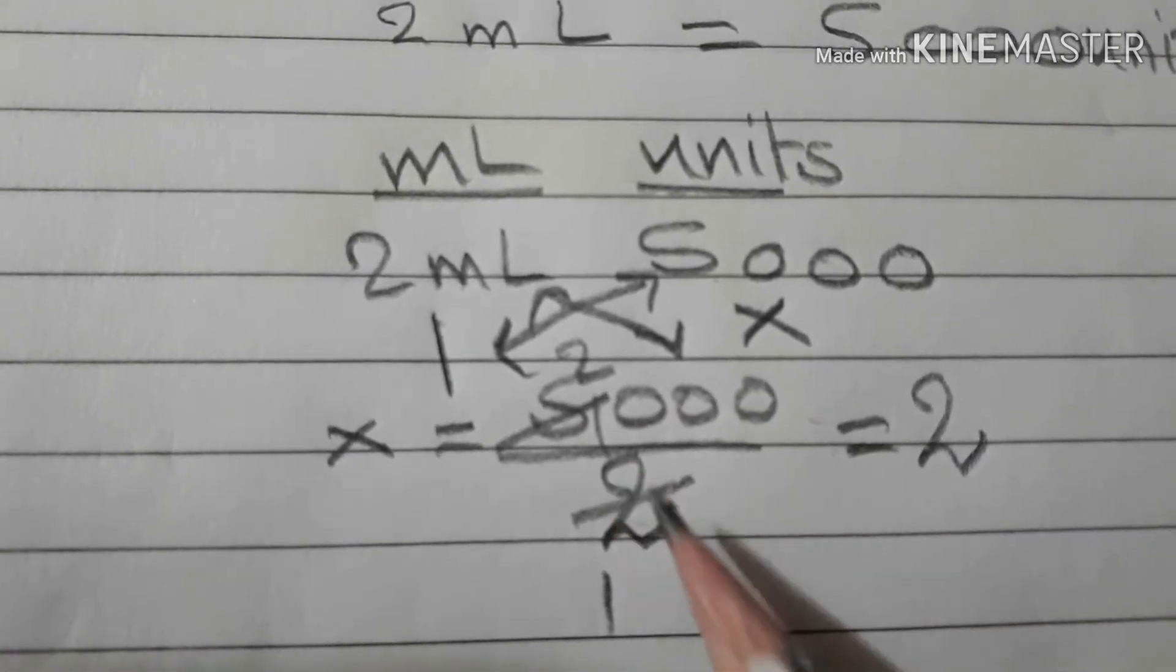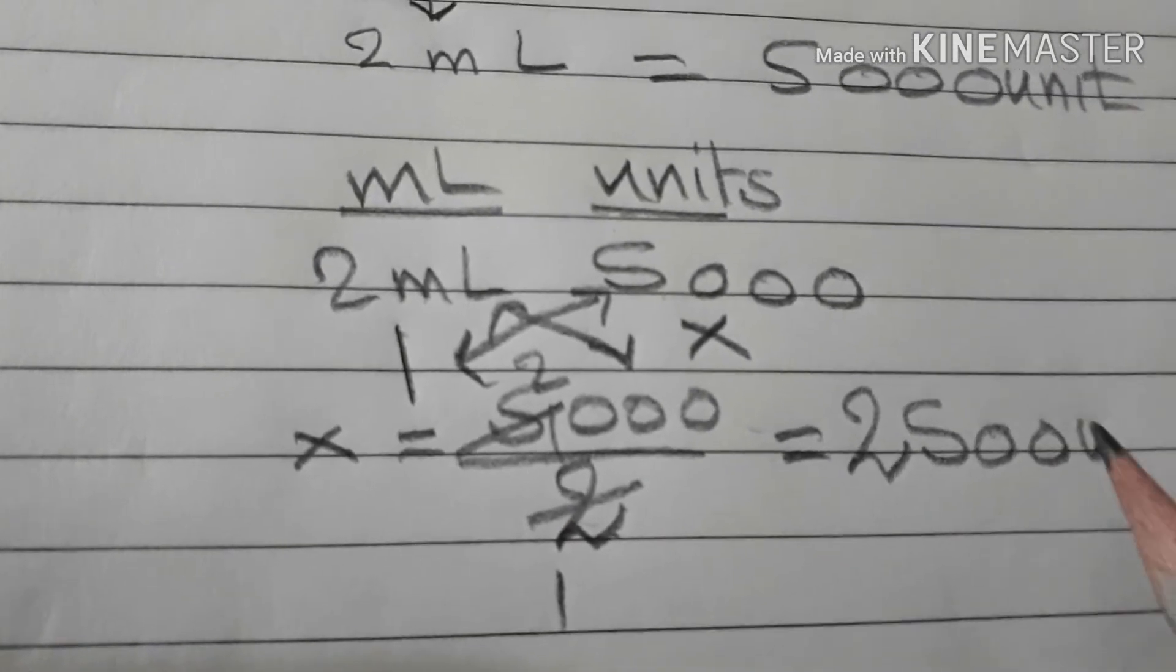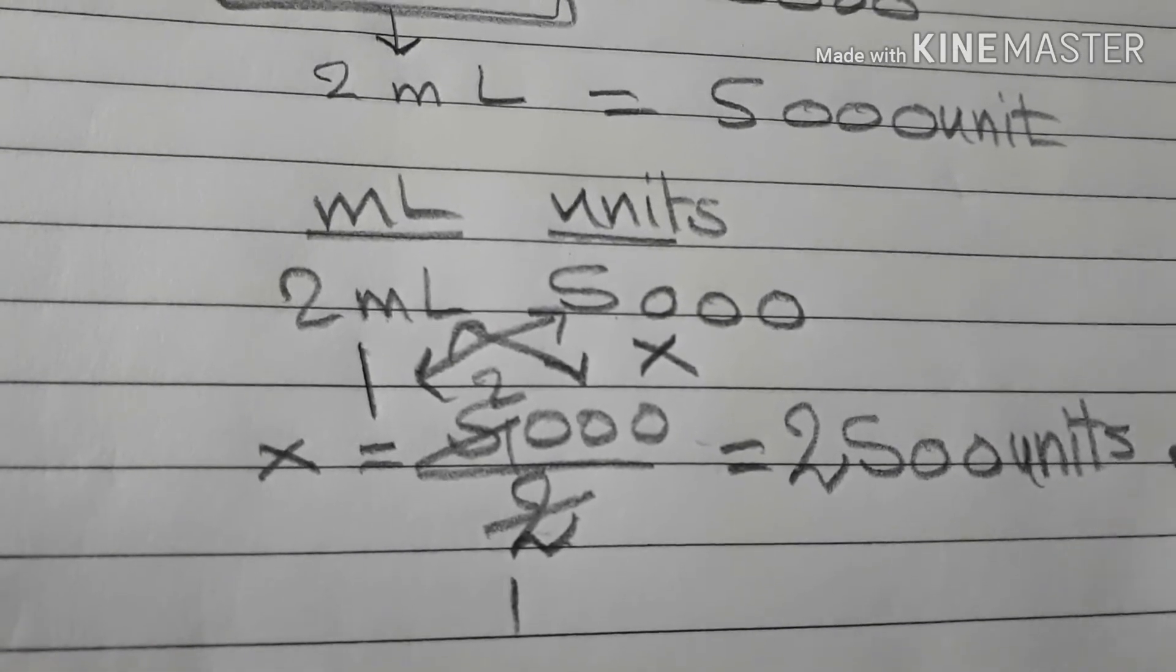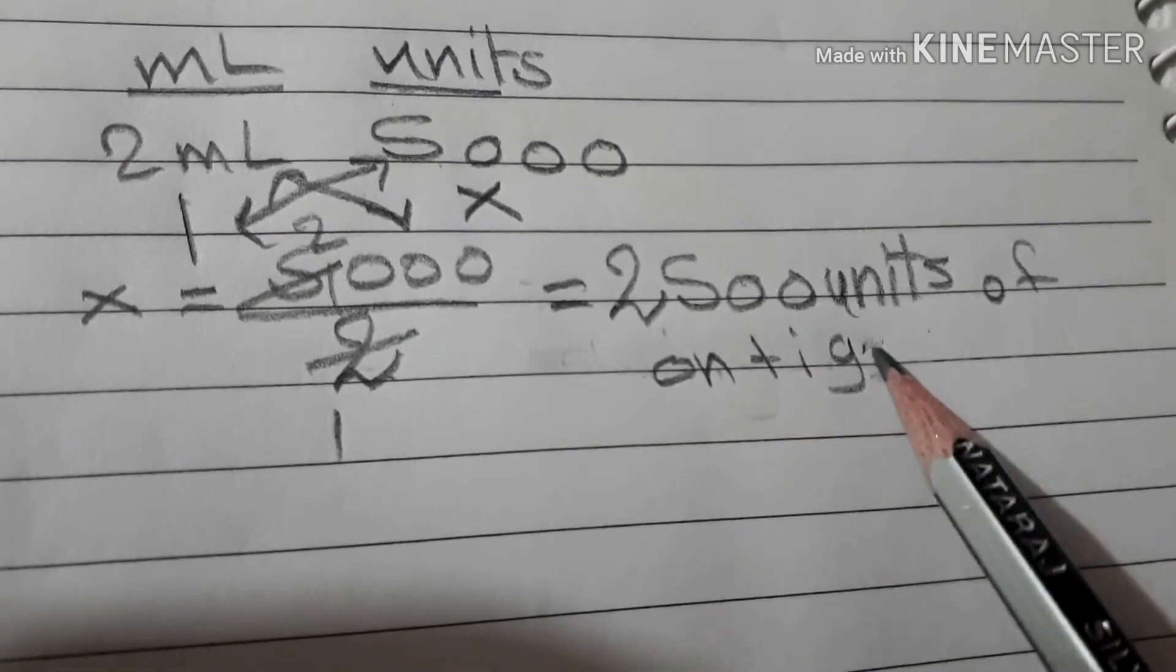1 milliliter equals 2500 units. 5000 divided by 2. 1 milliliter of the antigen. Thank you.